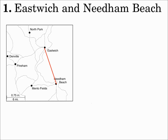If I measure that, the length is 1 and 7 sixteenths inches. Now I need to find the actual distance. The scale of the map is 0.75 inches, which equals 6 miles. So that can be the first fraction in my proportion: 0.75 over 6. 0.75 is inches on the map, 6 is actual miles. So I have map distance over actual distance.